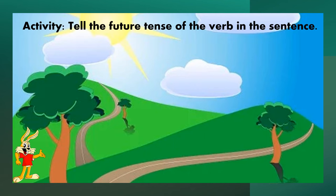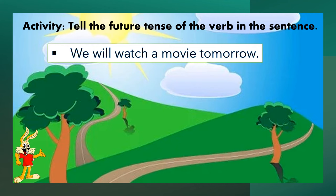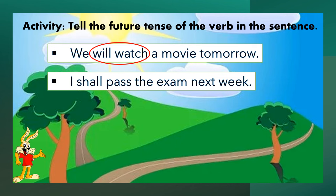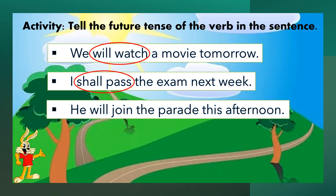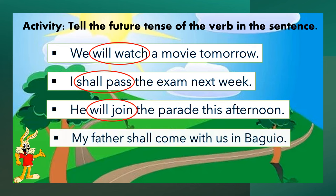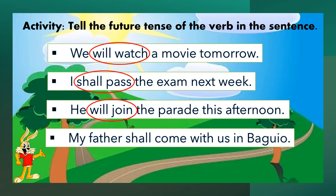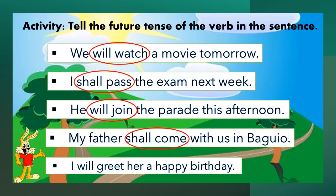Let's do this activity. Tell the future tense of the verb in the sentence. We will watch a movie tomorrow. Good job — will watch. I shall pass the exam next week — shall pass. He will join the parade this afternoon — will join. My father shall come with us in Baguio — shall come. I will greet her a happy birthday — will greet.